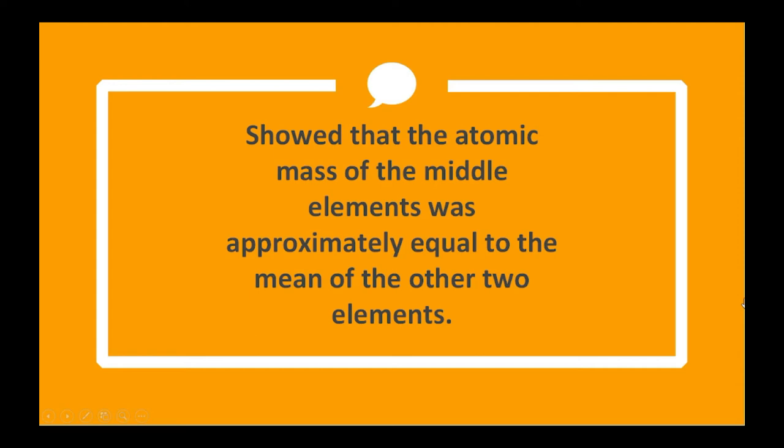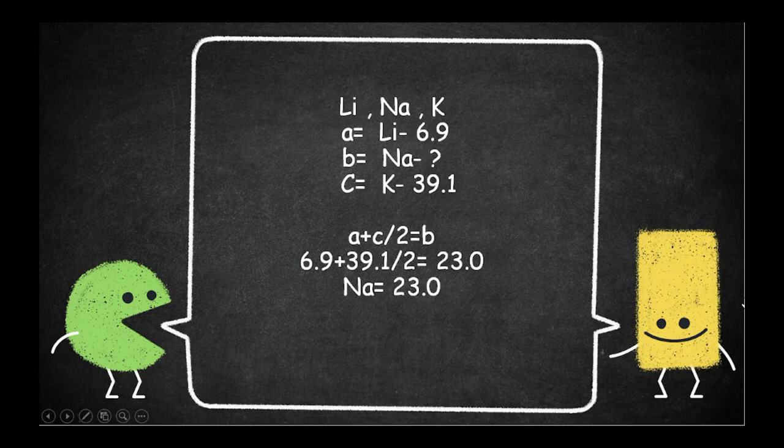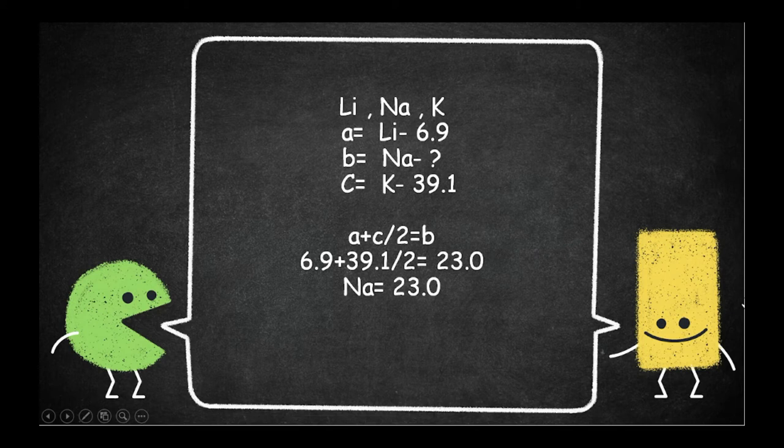Mean is also called average. So we have three elements here: lithium, sodium, and potassium. Lithium has a mass of 6.9, sodium we have to find out, and potassium K has 39.1. There is a formula: a + c divided by 2. Lithium is a, sodium is b, and potassium is c.